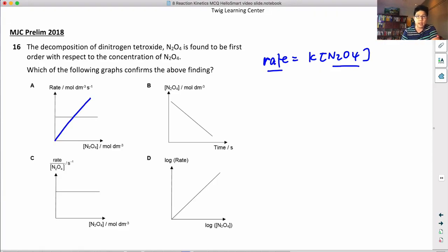Let's look at B. So this is a first order reaction with respect to N2O4. The graph should look like this with a constant half-life. Let's look at C.